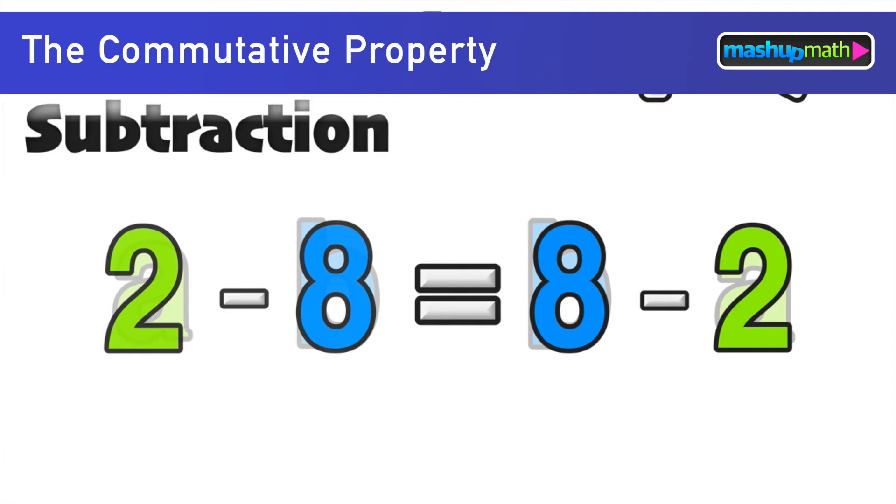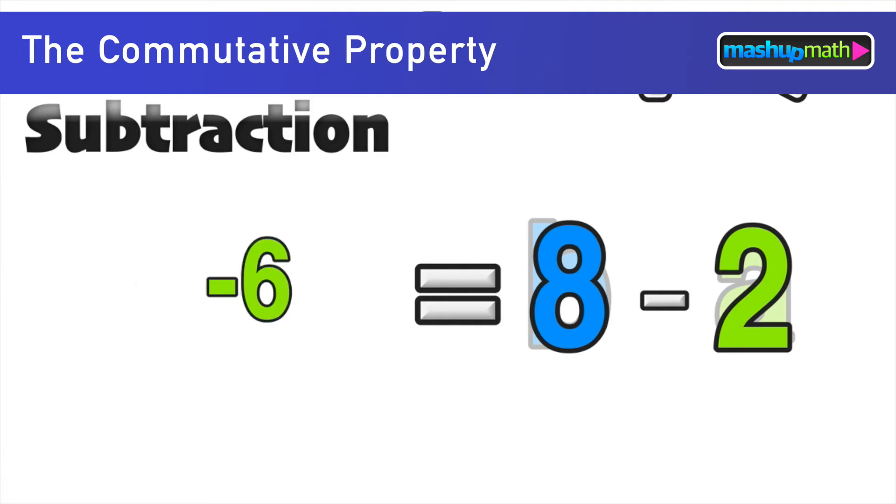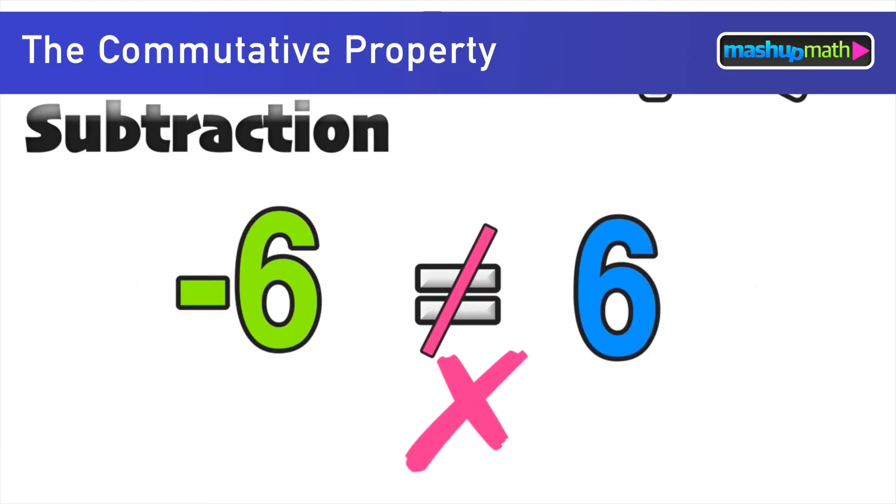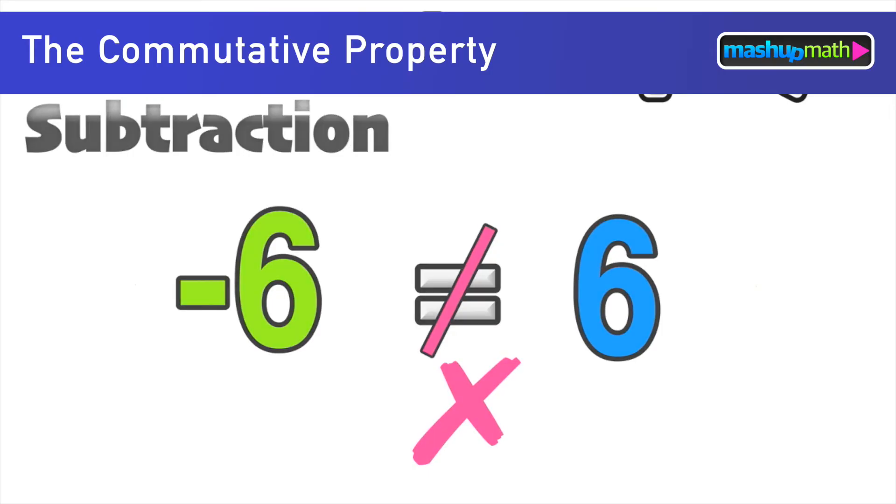Two minus eight on the left side of the equation is equal to a negative six. And then we can head on over to the right side of the equation, the reverse order, eight minus two which we know is equal to positive six. Now of course we notice a problem here because negative six does not equal positive six. And so this example helps us to understand why the commutative property does not hold for subtraction.